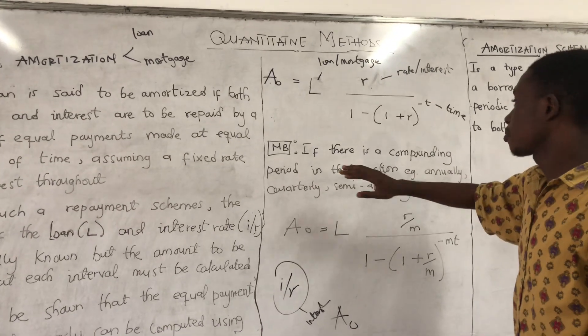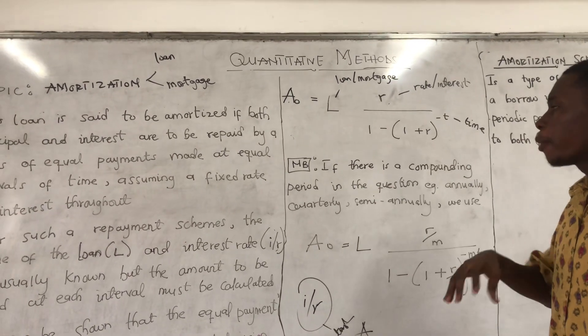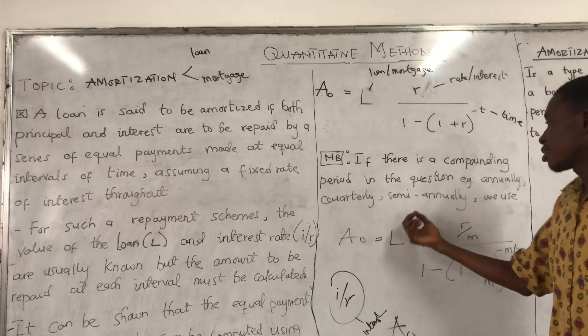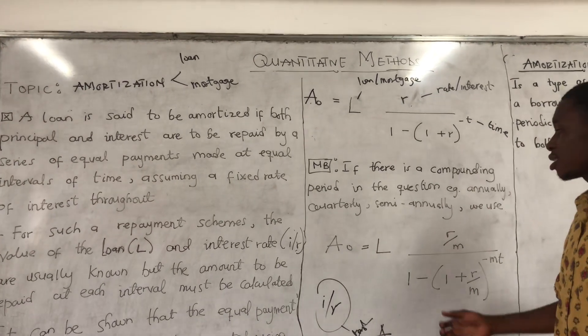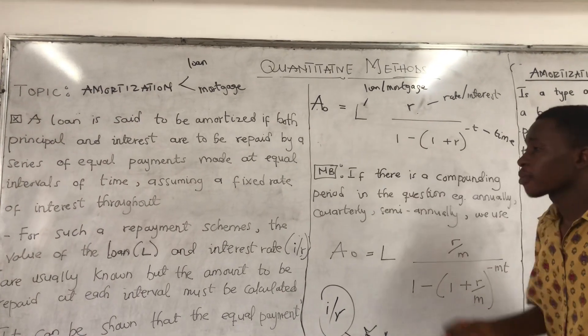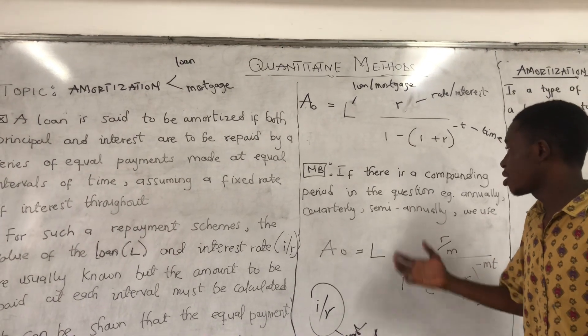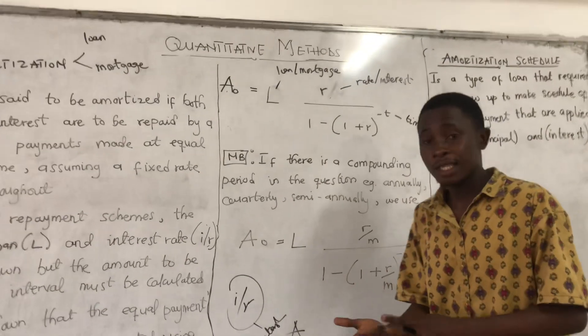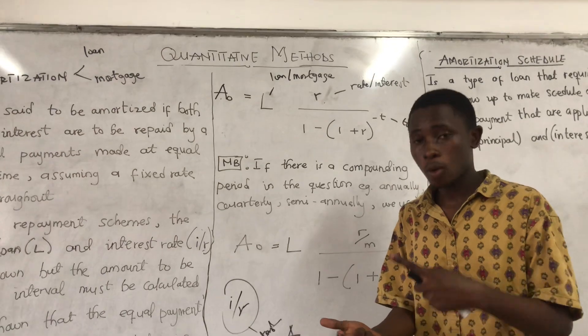Now, note again, if there is a compounding period in the question, example annually, quarterly, semi-annually, we use the same formula, but there is a trick here. If the question is using a compounding period like annually, semi-annually, quarterly, monthly, we use the same formula.